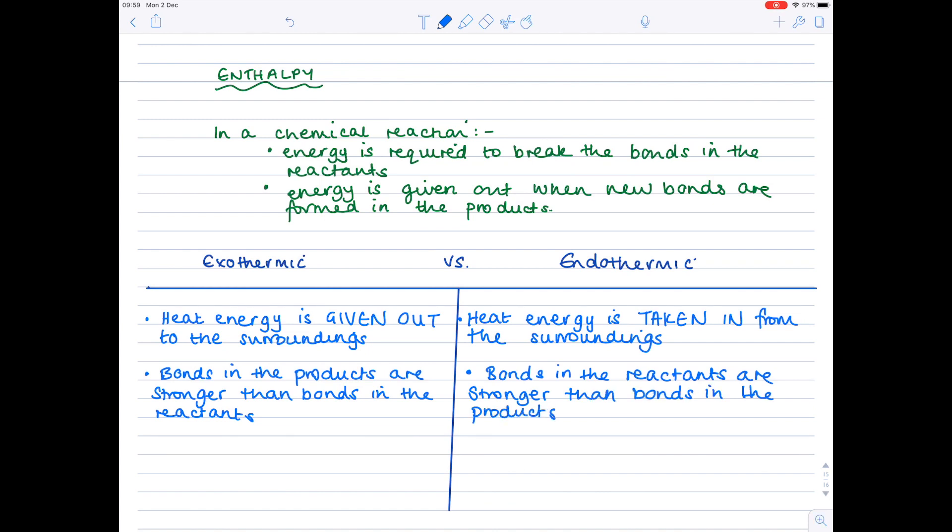If we look at some key examples of different types of reactions, with exothermic reactions we've already said that heat energy is given out so you'll feel the reaction become hot. Well what sort of reactions become hot? Well if you've ever carried out a neutralization reaction between an alkali and an acid for example then you'll feel the mixture and it gets hot. And obviously when you burn things, you combust them, they automatically get hot. So neutralization and combustion are both examples of exothermic reactions.